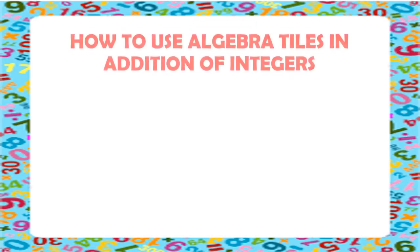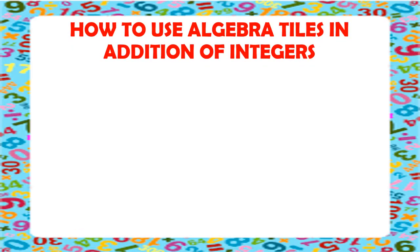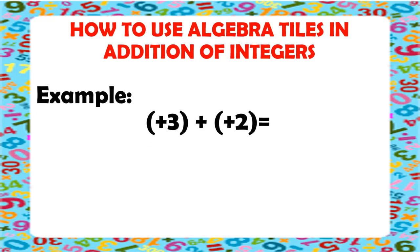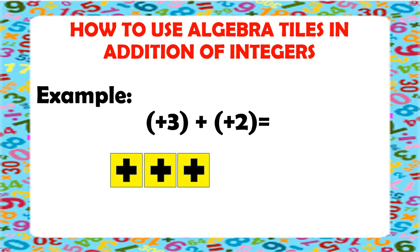Now, I will show you how to add integers using the algebra tiles. The first example that we have is positive 3 plus positive 2. Positive integers can be represented with yellow tiles, and negative integers can be represented with blue tiles. So, we have positive 3 — positive means yellow tiles, and 3 means 3 yellow tiles. So, let's draw 3 yellow tiles first.